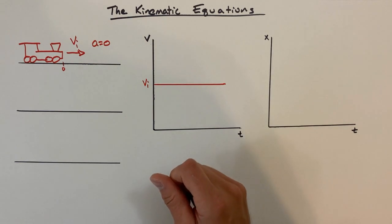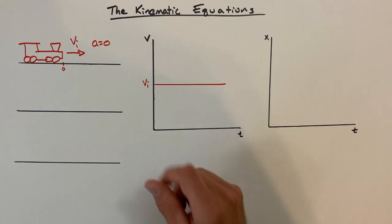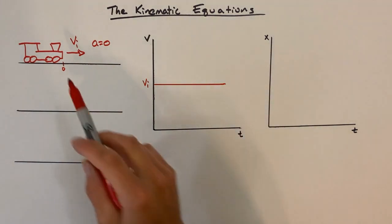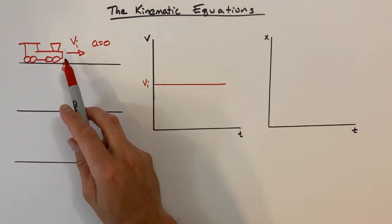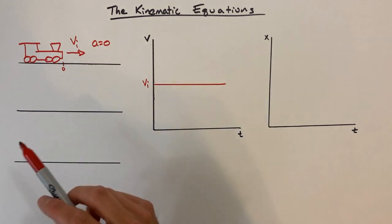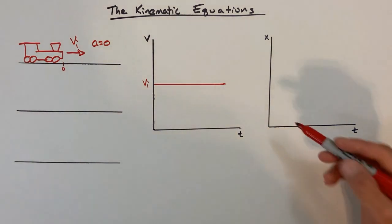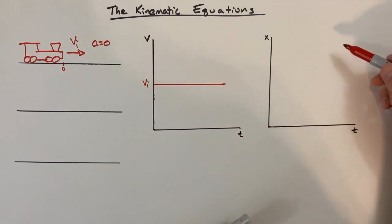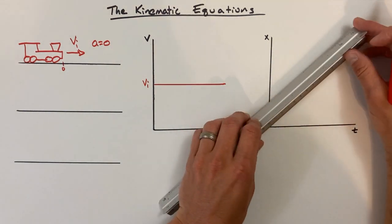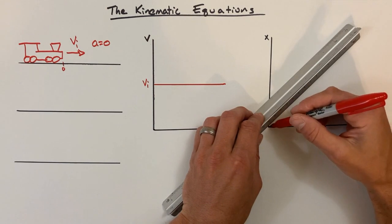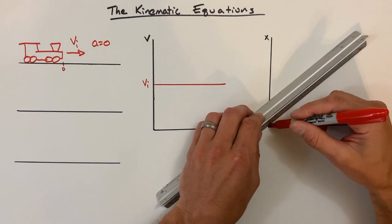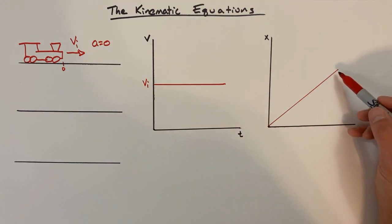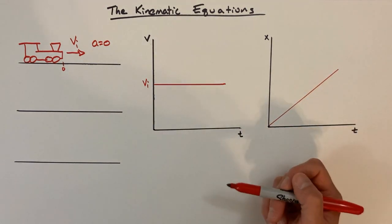On our velocity versus time graph, we would see a horizontal line. It's horizontal because it has an acceleration of zero — the velocity is never changing. Because this train is moving with a constant velocity, the position is steadily increasing. So the position, which is initially zero, is going to steadily increase at a rate of V. On our graph, we'll see a diagonal line — a steadily increasing position. The slope of this line would be VI.